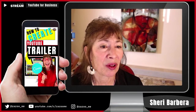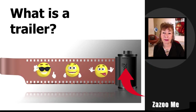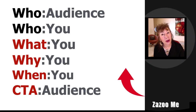Let me do a quick recap. What's a trailer? It's just like a movie trailer — you've got to get your viewers excited to watch. Hook your viewers with snippets of your content. It should include who your audience is, who you are, what you like to do, why you like to do it, when you're going to be posting, and finally a call to action. How long should it be? 36 seconds to two minutes. Where does it go? On your homepage — choose the 'Customize' button and add it there.